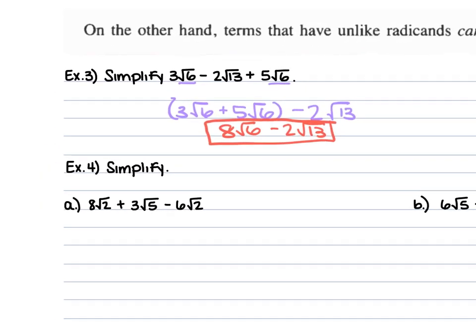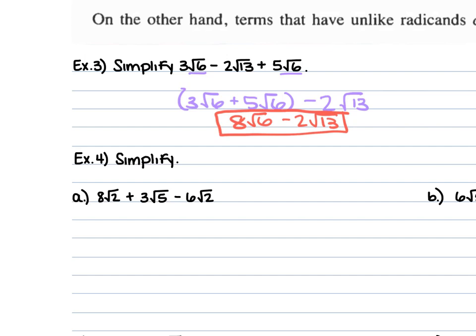For part A, we have 8 square root of 2 plus 3 square root of 5 minus 6 square root of 2. The 8 square root of 2 and the negative 6 square root of 2 are like terms: 8 minus 6 is 2. Keep the radical of 2, then add on 3 square root of 5, giving us 2 square root of 2 plus 3 square root of 5.